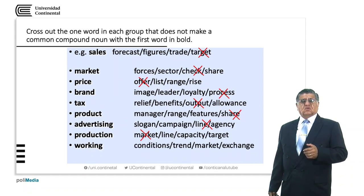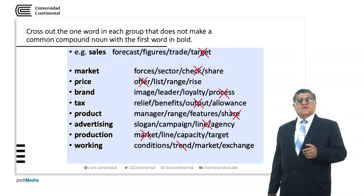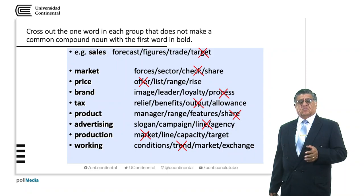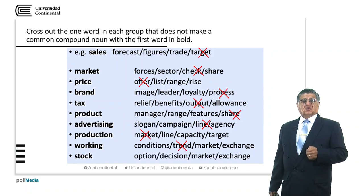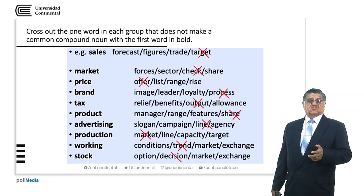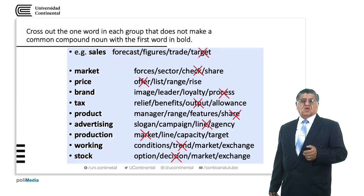Working: 'working conditions', 'working trend' — trend is a possible direction. Stock: 'stock option', 'stock market', 'stock exchange' are valid. 'Stock decision' does not have a clear meaning.